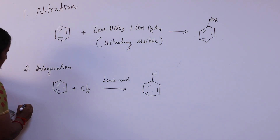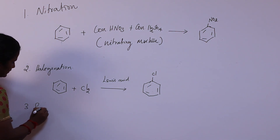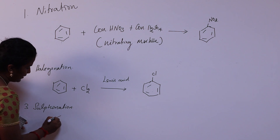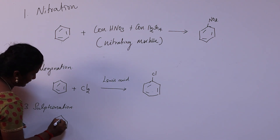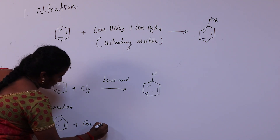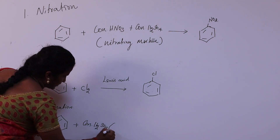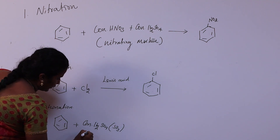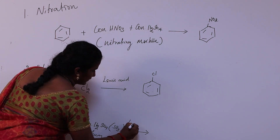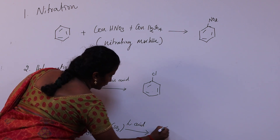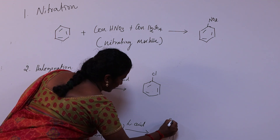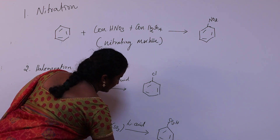The third type is sulfonation. The benzene ring reacts with concentrated sulfuric acid, which generates SO3 — this is called oleum — in the presence of a Lewis acid. The product is the sulfonated aromatic compound.